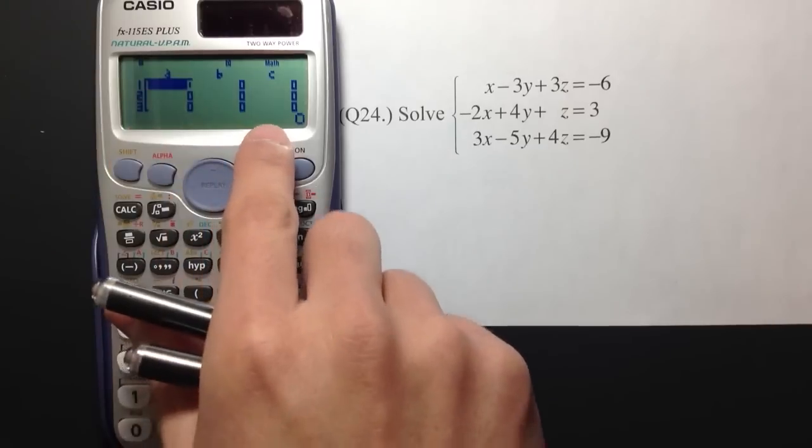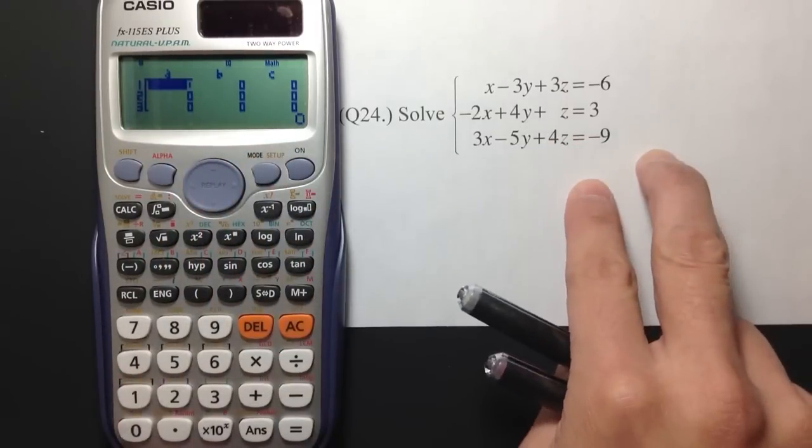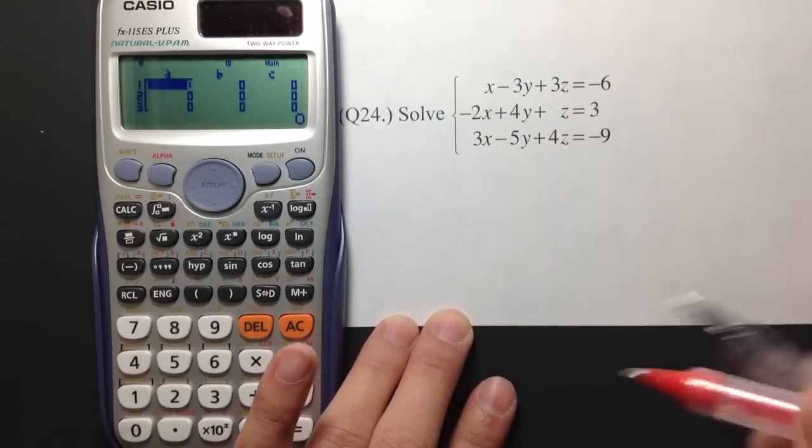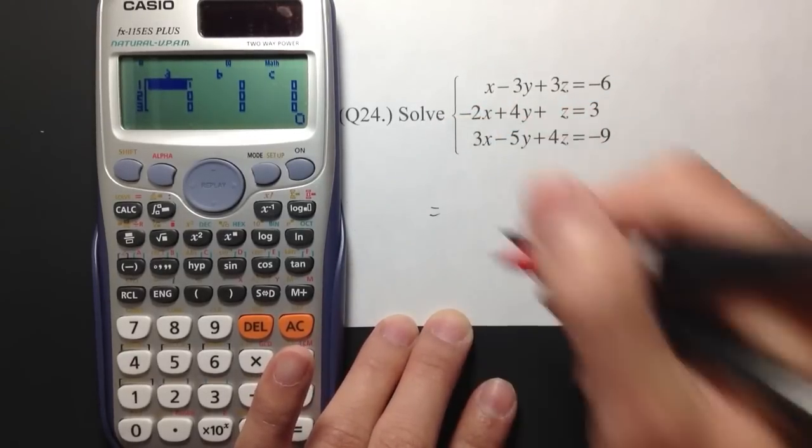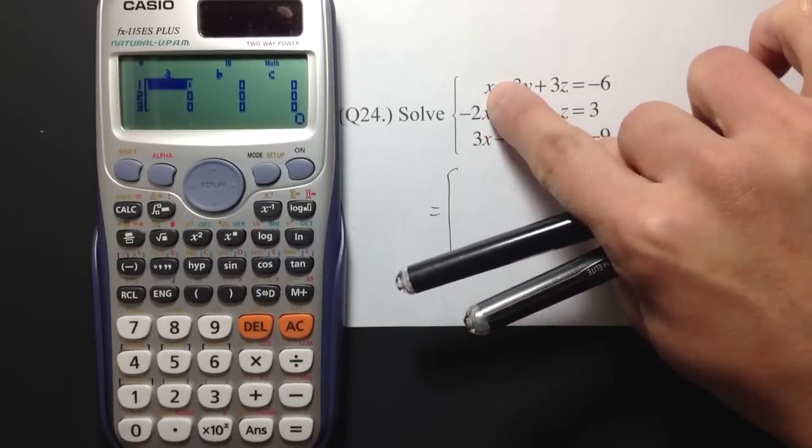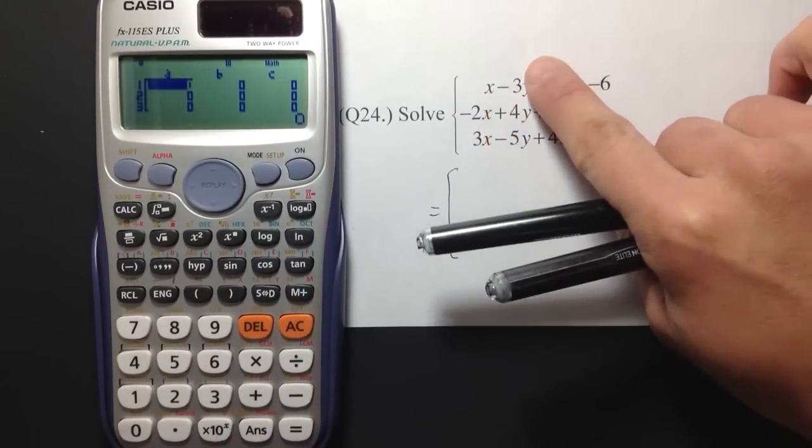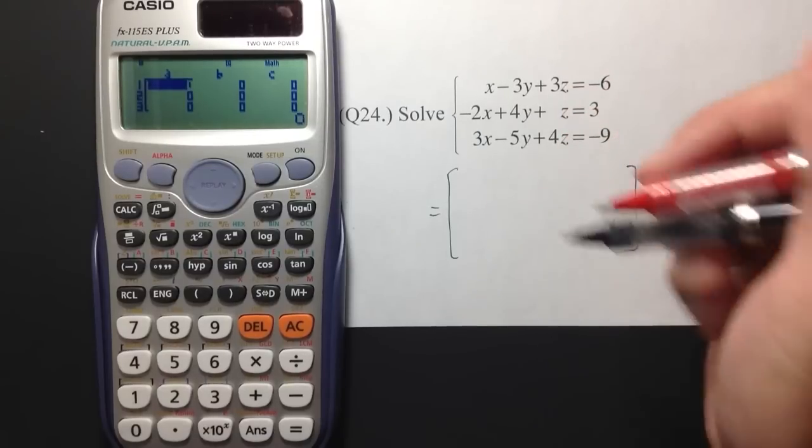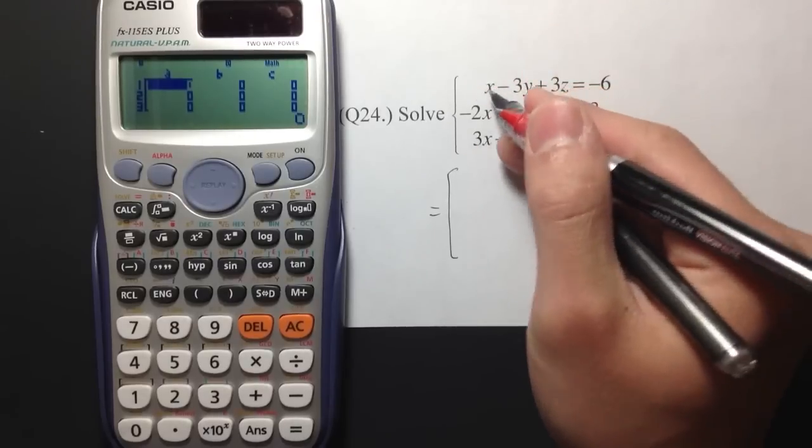And it's going to give you a place where you can enter the coefficients. But first, we need to translate this into a matrix. So, it's going to look like the following. We're just going to take down the coefficients of the x, the coefficients of the y's, z's, and the numbers. I'm going to just put them in order like this.